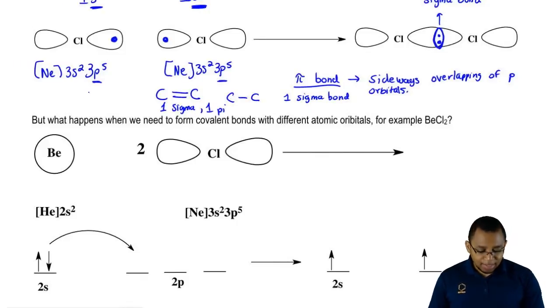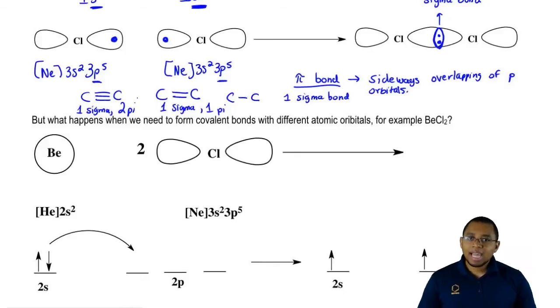Let's say a compound has three bonds, a triple bond. It's going to have one sigma and two pi bonds. Every extra bond you add, that's a pi bond being added.